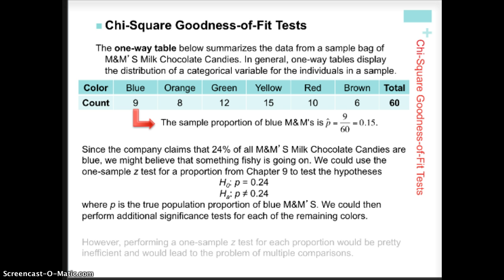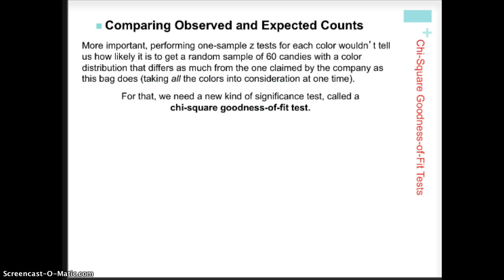Now, we know that we could run multiple Z tests, one sample Z tests, one for each of the colors. But that sounds kind of like a lot of work. And we don't necessarily want to do that if we have an alternative. And we do have an alternative because we can run, instead of multiple tests, one for each color, using the proportions, what we can do is we can run the chi-square goodness of fit test.